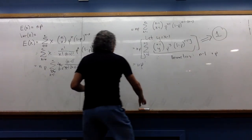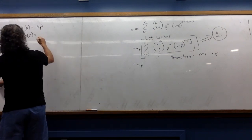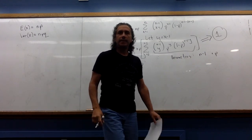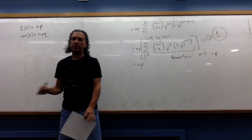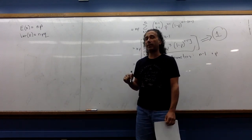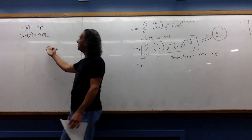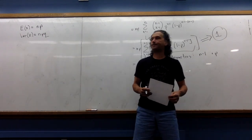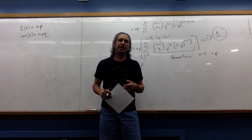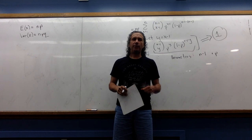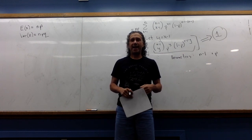So E[X] = np for the binomial. Without going through the proof, the variance is Var(X) = npq. These results are satisfying: when n=1 we have a single Bernoulli trial, and E[X] = p and Var(X) = pq — exactly what we derived for the Bernoulli distribution. So we don't even need to memorize the Bernoulli distribution separately; it's just the special case of binomial with n=1. In summary, the binomial distribution is used when you have two outcomes and you repeat independent trials over and over. Thanks for listening, and I'll see you next time.